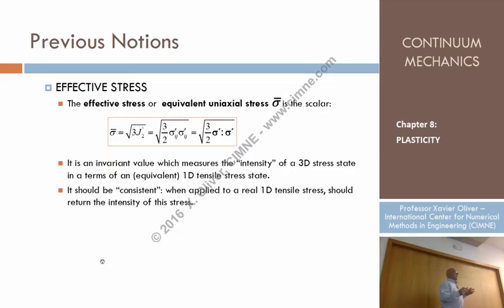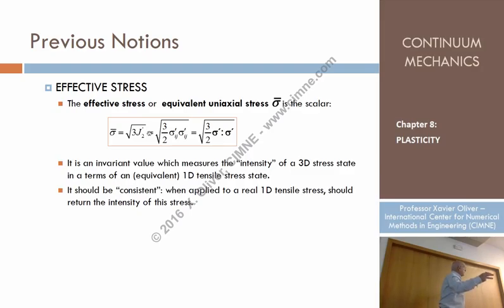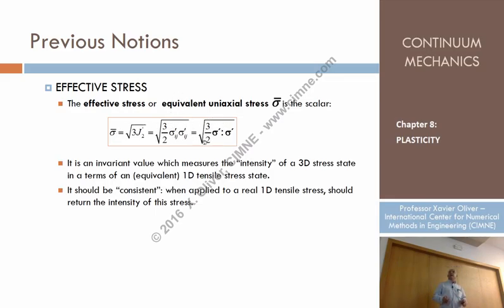Every algebraic combination of invariants is also invariant, and one very appealing measure representative of a stress state is what is called the effective stress or equivalent uniaxial stress — it is a scalar. It is denoted by sigma with an upper bar, and it is defined as the square root of three times the second J-invariant of the deviatoric part of the stress tensor. If I have a stress tensor, I obtain the deviatoric part, compute J2-prime, and performing this operation I obtain the effective stress. Typically it is written as the square root of three-over-two times sigma-prime double-dot sigma-prime.